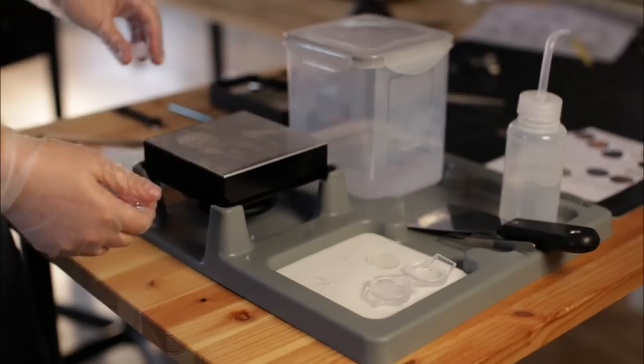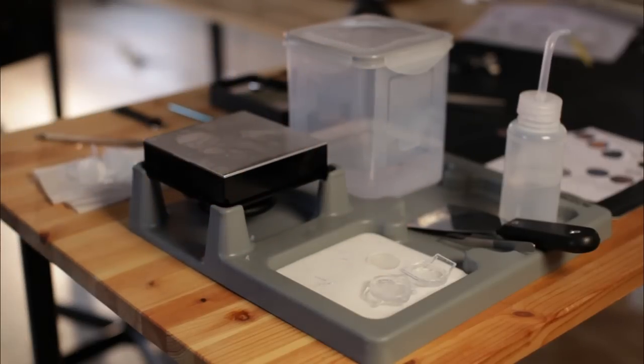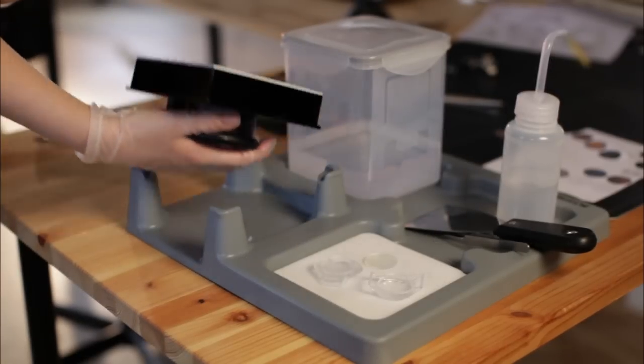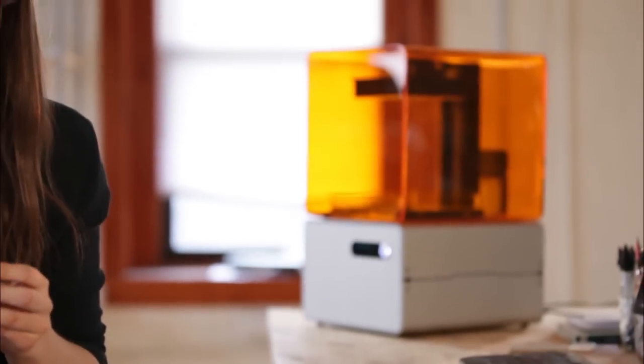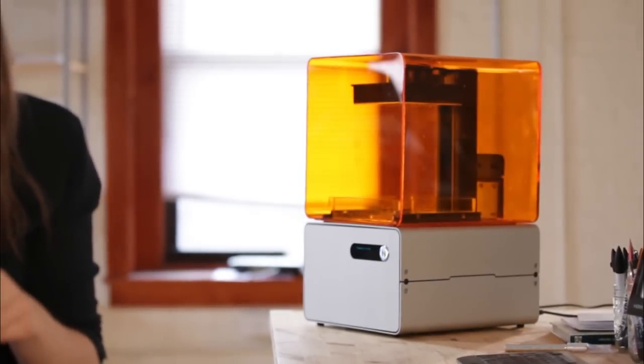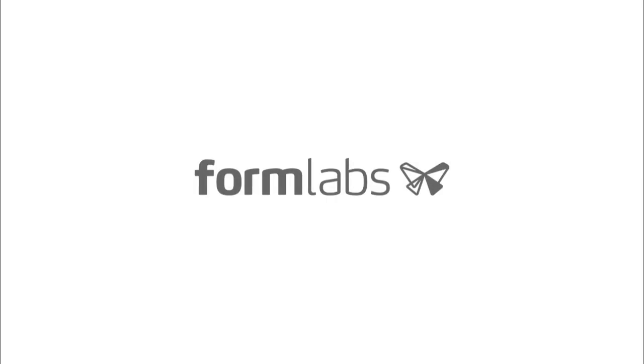Allow the part to air dry. Evaporating the alcohol will lead to the best surface finish. Return the build platform to the printer. And that's it! Check out our forums at support.formlabs.com for further tips on painting and to see lots of cool prints from the Formlabs community. Form on!